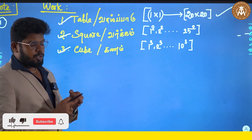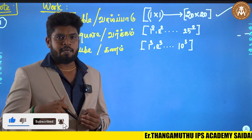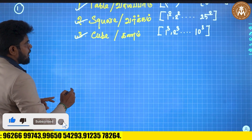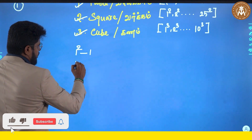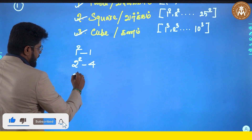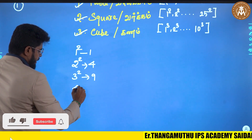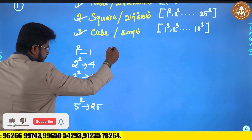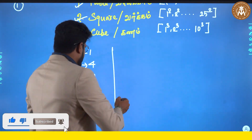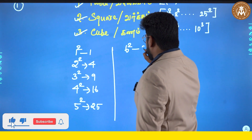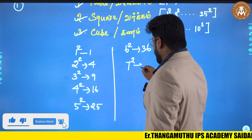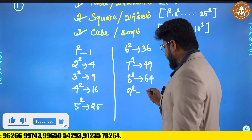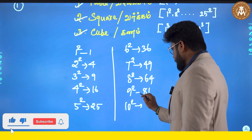How many exams are you? Are you a school student? Let's say 1 to 25. 1 squared is 1. 2 squared is 4. 3 squared is 9. 4 squared is 16. 5 squared is 25. 6 squared is 36. 7 squared is 49. 8 squared is 64. 9 squared is 81. 10 squared is 100.